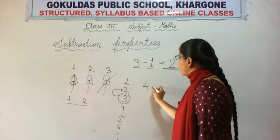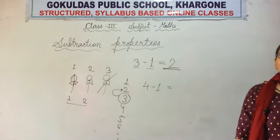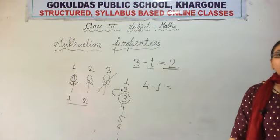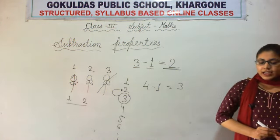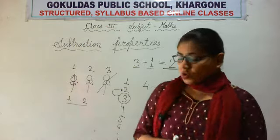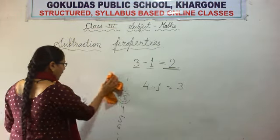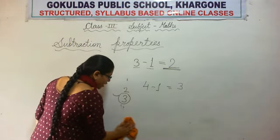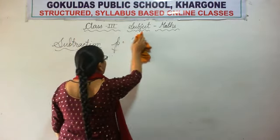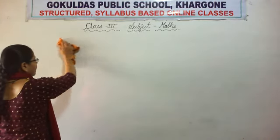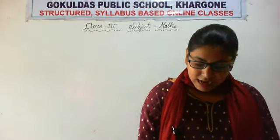So 4 minus 1 — what will be the answer? What is the predecessor of 4? What is the previous number of 4? 3 is the previous number of 4, so our answer will be 3. Whenever we subtract 1 from any number, we get the previous number or predecessor. And whenever 0 is subtracted from any number, the result is the number itself.